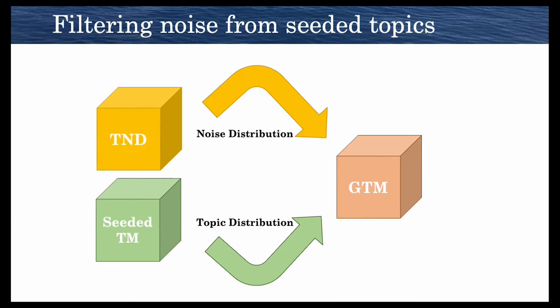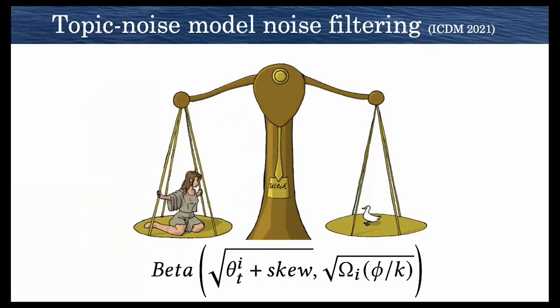How does that work on the inside? The way that we do this is with topic noise model noise filtering. It's an extension to an idea that was proposed for unsupervised topic modeling in ICDM. This noise filtering process is integral to creating topics that are quickly and easily interpreted by humans for further guidance and seed topic curation.